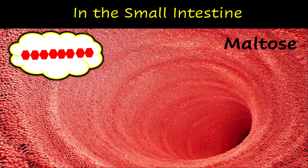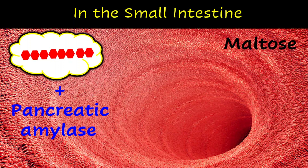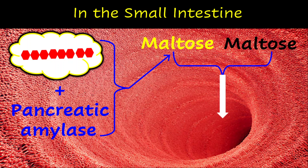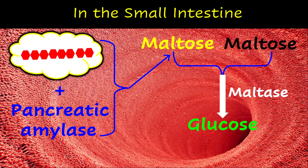Once in the small intestine, the excess starch will be acted upon by pancreatic amylase, which will break it down into maltose. So now we have more maltose molecules. The maltose will then be acted upon by maltase and converted into glucose, which is a monosaccharide. Remember that maltose is a disaccharide.